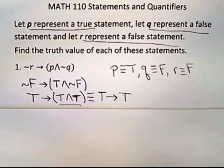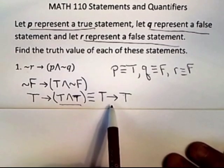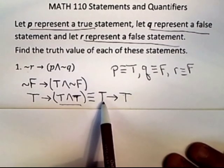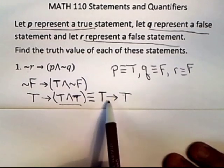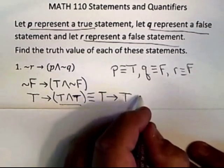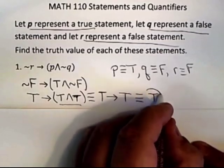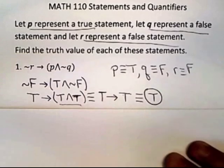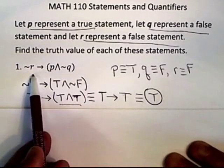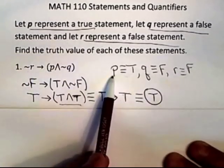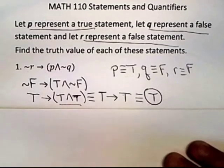So going back, if the only time that it's FALSE is if p is TRUE and q is FALSE, that's not one of those cases. So that tells you that this implication is TRUE. And now you've completely simplified it, so the truth value of this original statement, given these three pieces of information, is TRUE.